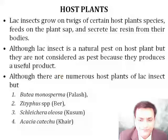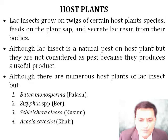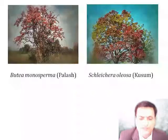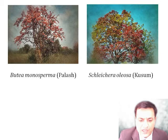Lac insects grow on twigs of different types of host plant species. Some of the main species are Butea monosperma, known as palash; Ziziphus, known as ber; Schleichera oleosa, known as kusum; and Acacia catechu, known as kher.